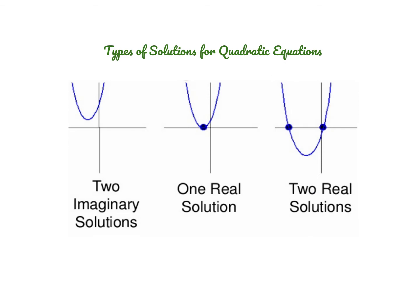So today we are going to be, again, solving quadratic equations. When you're solving a quadratic equation, there are three types of solutions you could expect to get. You might get a scenario where you don't have any real solutions, so you actually have two imaginary solutions. You might have a scenario where you get one real solution, and you might have a scenario where you get two real solutions.